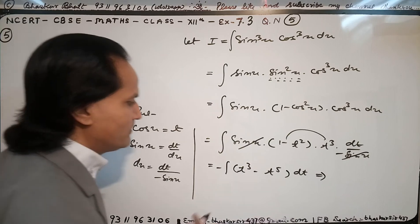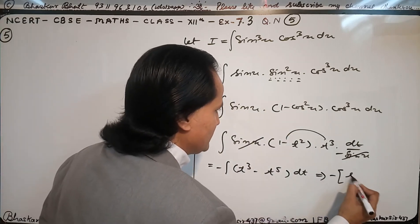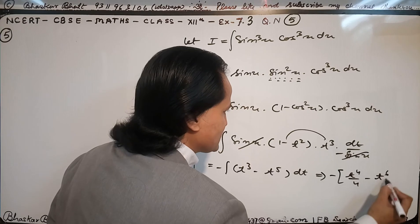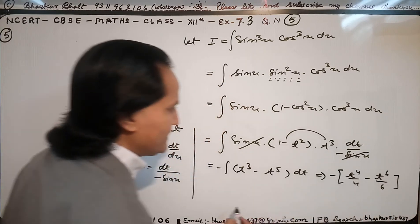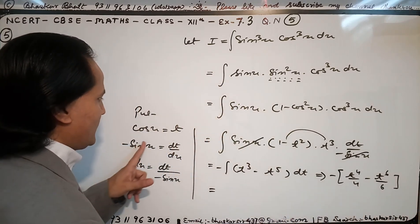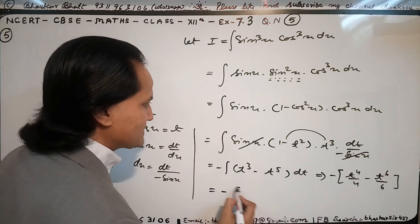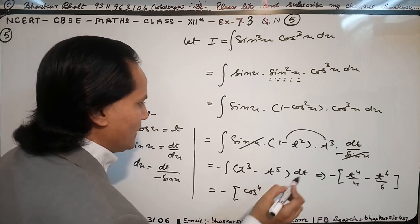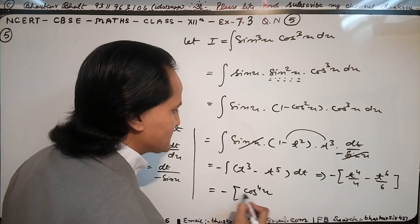Definitely you are right: t to the power 4 by 4 and minus t to the power 6 by 6. Now putting the t value back, I will get minus cos to the power 4 x by 4.